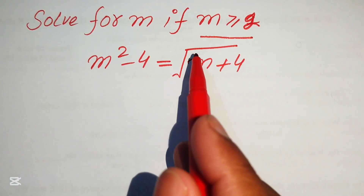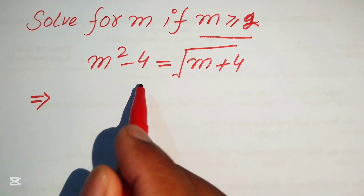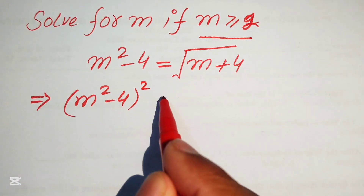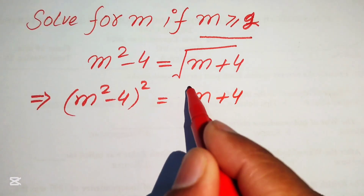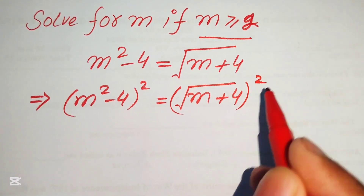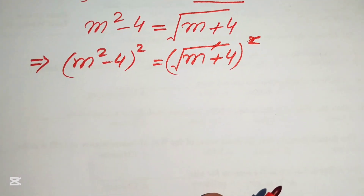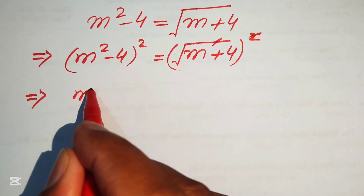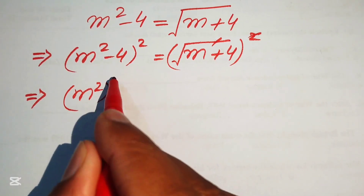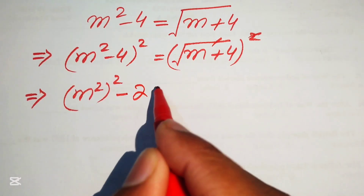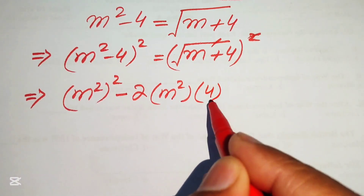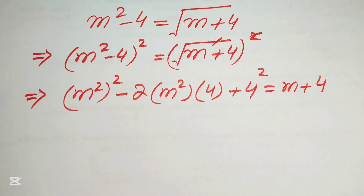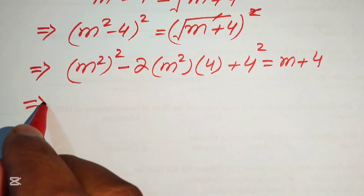The very first step is to remove the radical sign on the right-hand side. To do this, we square both sides, giving us (m² - 4)² equals (√(m + 4))². The square root is eliminated, and we expand the left side using the algebraic identity (a - b)² = a² - 2ab + b².